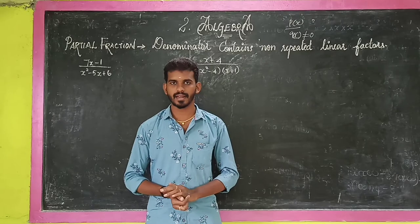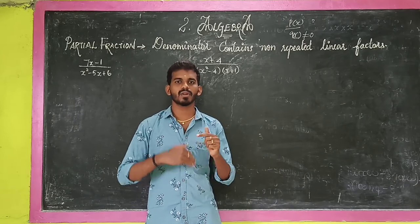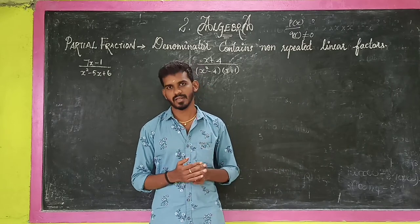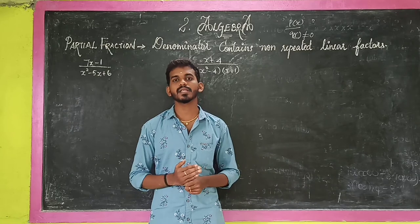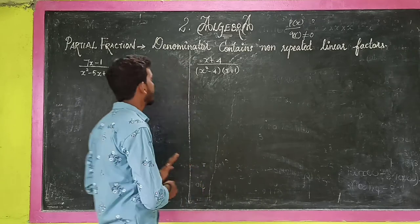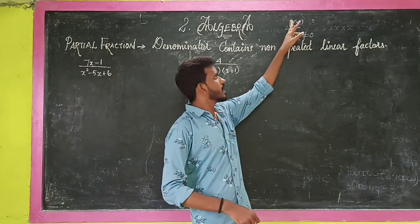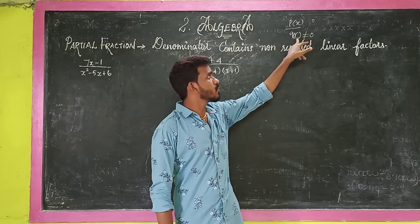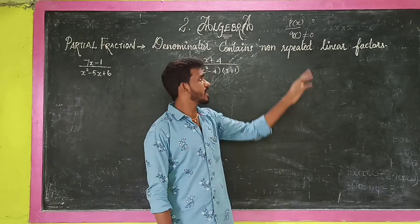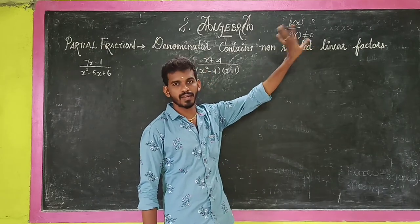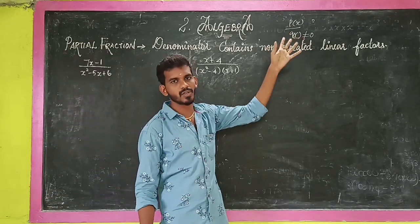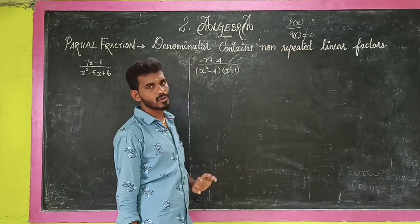Partial fraction means one rational fraction is written into two different fractions. One expression is split up into partial fractions. The general form is p(x) divided by q(x), where q(x) should not be equal to zero.